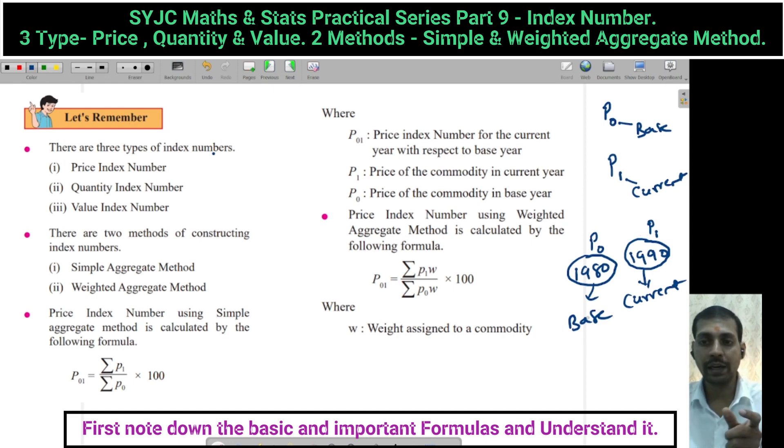Similarly, quantity - in 1980 we will represent Q0 and in 1990 we will represent Q1. Similarly, value - in 1980 we will represent V0 and in 1990 we will represent V1. Basically, 0 is used for base year and 1 is used for current year.